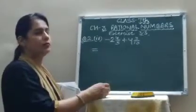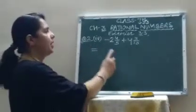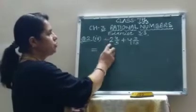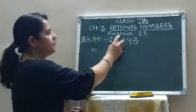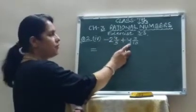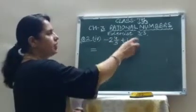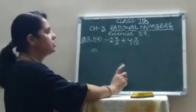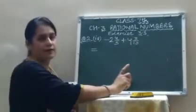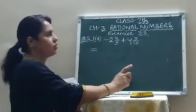Now question number 2, part 4: minus 2 whole number 4 upon 5 plus 4 whole number 3 upon 10. First, change into improper rational numbers.